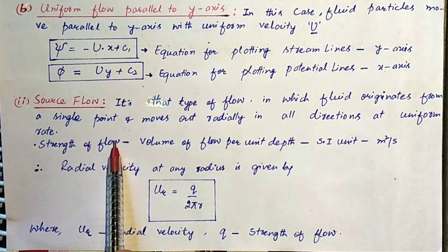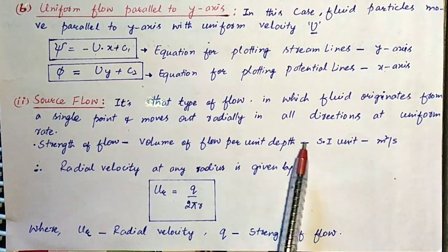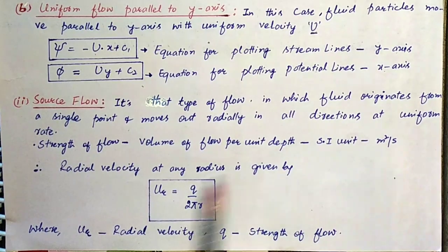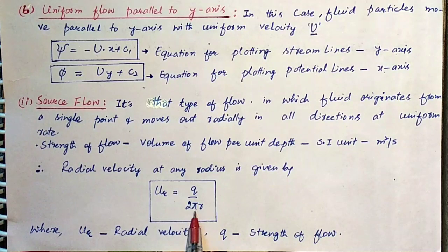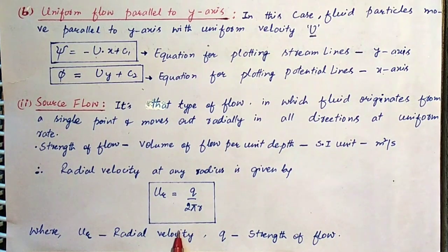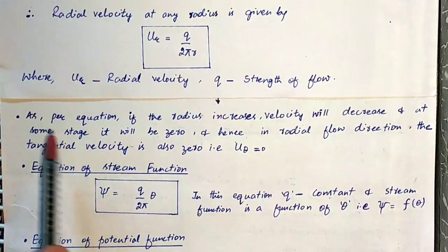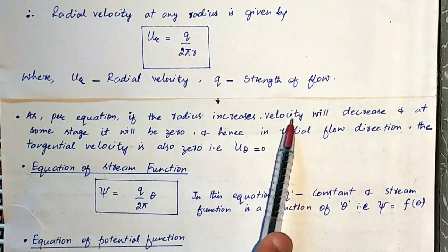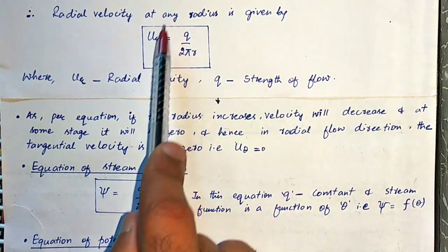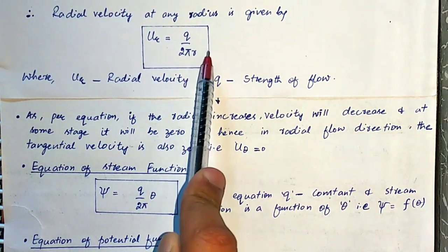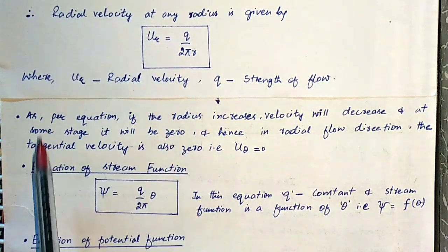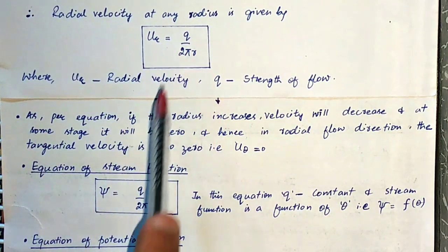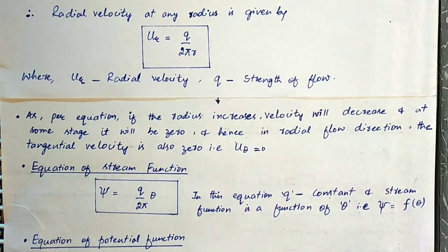The strength of flow is equal to the volume of flow per unit depth, and its SI unit is meter squared per second. The radial velocity at any radius is given by U_r equals Q upon 2πr, where U_r is radial velocity and Q is the strength of flow. As per this equation, if the radius increases, radial velocity will decrease. Therefore, radius and radial velocity are inversely proportional to each other.